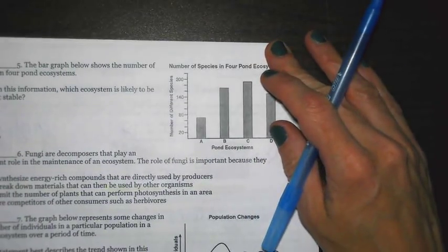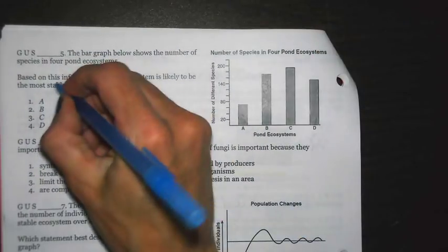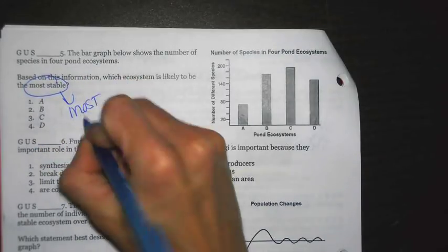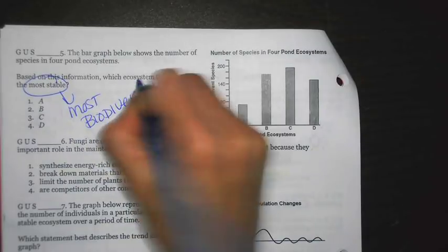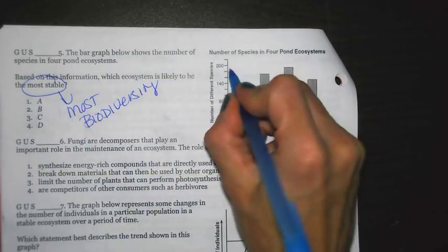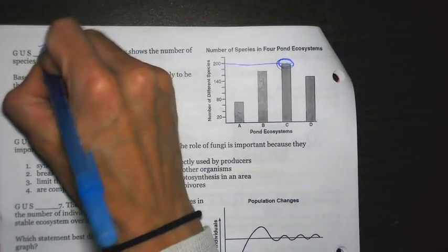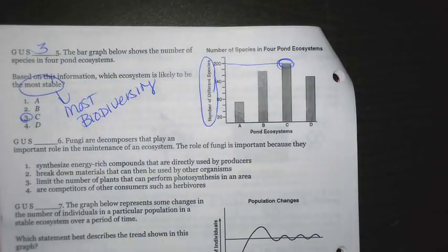The bar graph below shows the number of species in four pond ecosystems. Based on this information, which would be the most stable? Remember, in order to be stable, you need to have the most biodiversity. Looking at the graph here, you'll notice that C is the highest out of all of them. That means C has the most biodiversity because biodiversity refers to the number of different species.